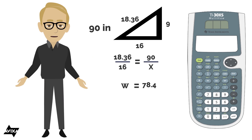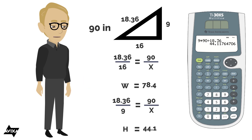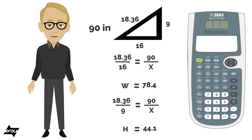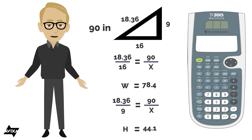Now let's find the height of that same 90-inch diagonal display. We set up 18.36 is to 9 as 90 is to x. Cross-multiplying: 9 times 90 divided by 18.36 gives us a height of basically 44.1 inches. That image height is used for farthest viewer calculations, and the width is used for closest viewer calculations in a BDM application.